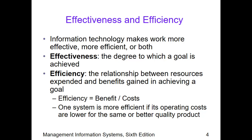One system is more efficient if its operating costs are lower for the same or better quality products. For example, if we have lesser resources but the quality of our products is sacrificed in the process, then it's not efficiency anymore. All other things being constant, the quality of the product must be maintained. We talk about resources consumed — be it raw materials, direct labor, or time itself.